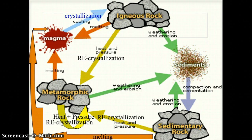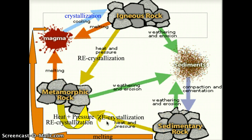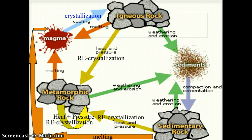Choose another rock group — how about sedimentary? Think of all the things you can do to a sedimentary rock so it won't be sedimentary anymore. You can weather and erode it into sediments, you can recrystallize it with heat and pressure into metamorphic, or you can melt it back into magma. Then think about in-arrows: how do sedimentary rocks form? There's only one way — sediment that compacts and cements into sedimentary rock.